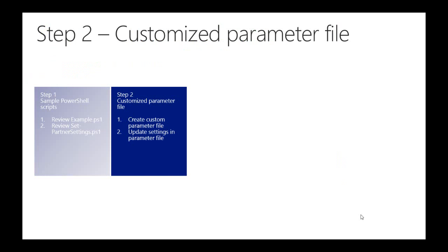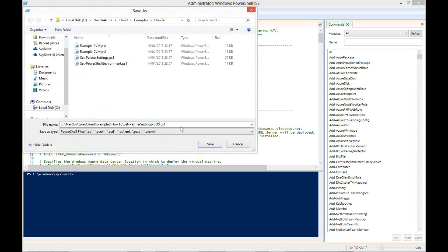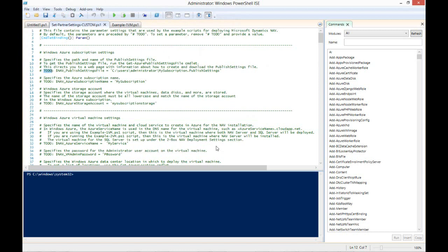Next, we need to make a copy of the SetPartnerSettings.ps1 script file and we must name the copy SetPartnerSettings-Custom.ps1, as this file name is referenced elsewhere in the provisioning process. In the copied file, we can specify the custom values we want to use for our NAV on Azure instance. When we run the provisioning process, this file name will be included along with any parameter settings we configure inside it.